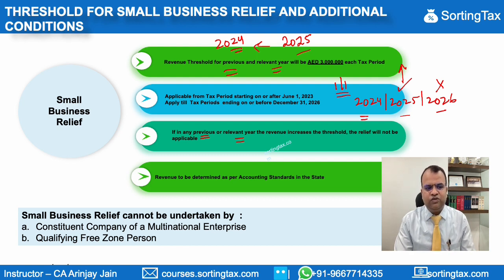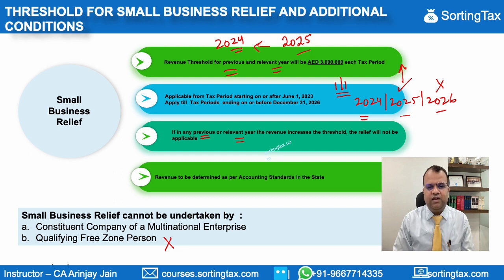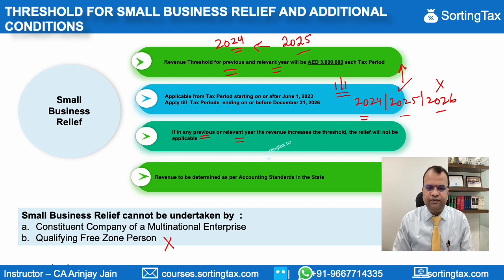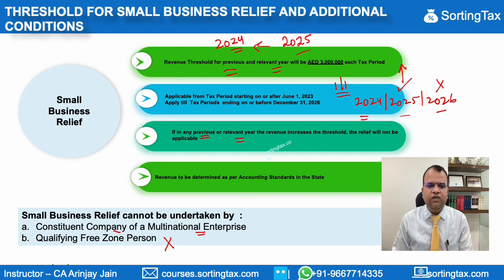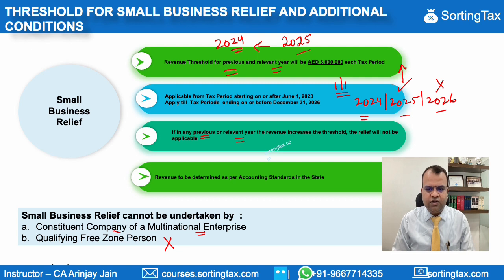This exemption of small business relief is not available to a person who is in a qualifying free zone. If a qualifying free zone person gets qualifying income, there is no taxation there anyway. Second, a constituent company of a multinational enterprise is also not eligible to claim this exemption, even if their revenue is below 3 million dirhams. A constituent entity is more relevant in the context of country-by-country regulations under UAE Corporate Tax law.